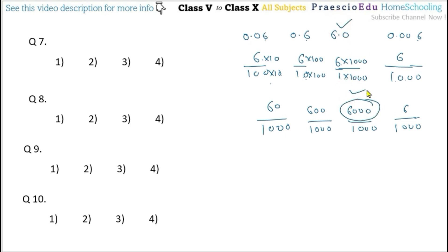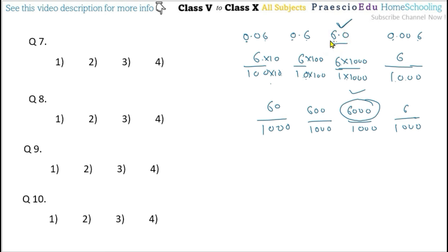Method 2: compare directly at the units place. Units digits are 0, 0, 6, and 0 respectively. Since 6 is greater, we can directly determine 6.0 is the greatest. This second method saves time but comes only after practice. So option number 3 is the correct answer.